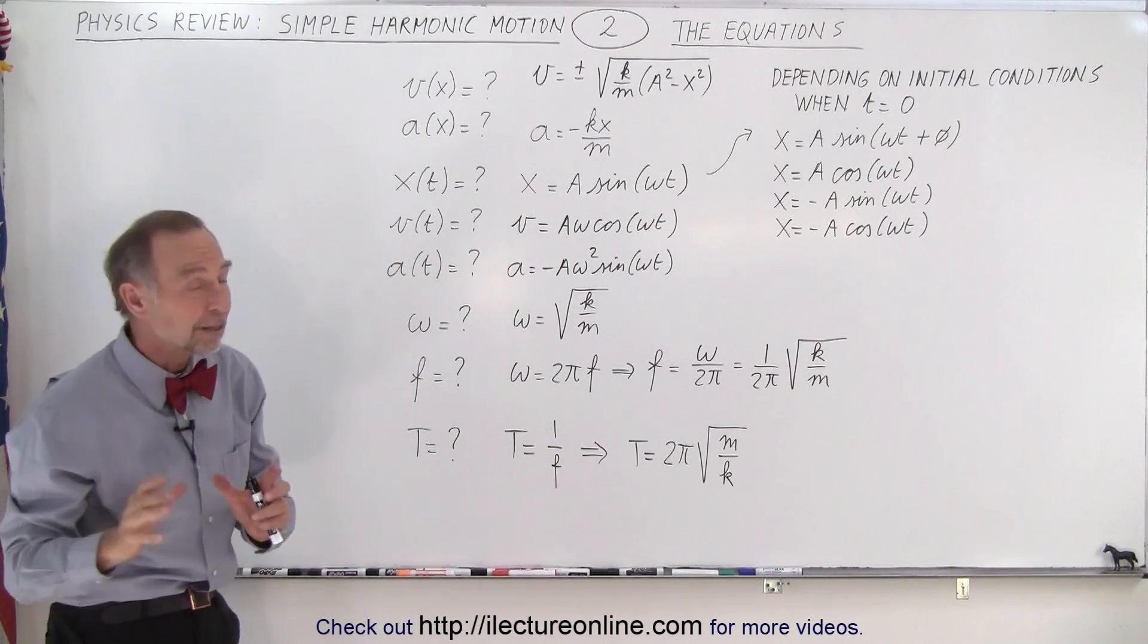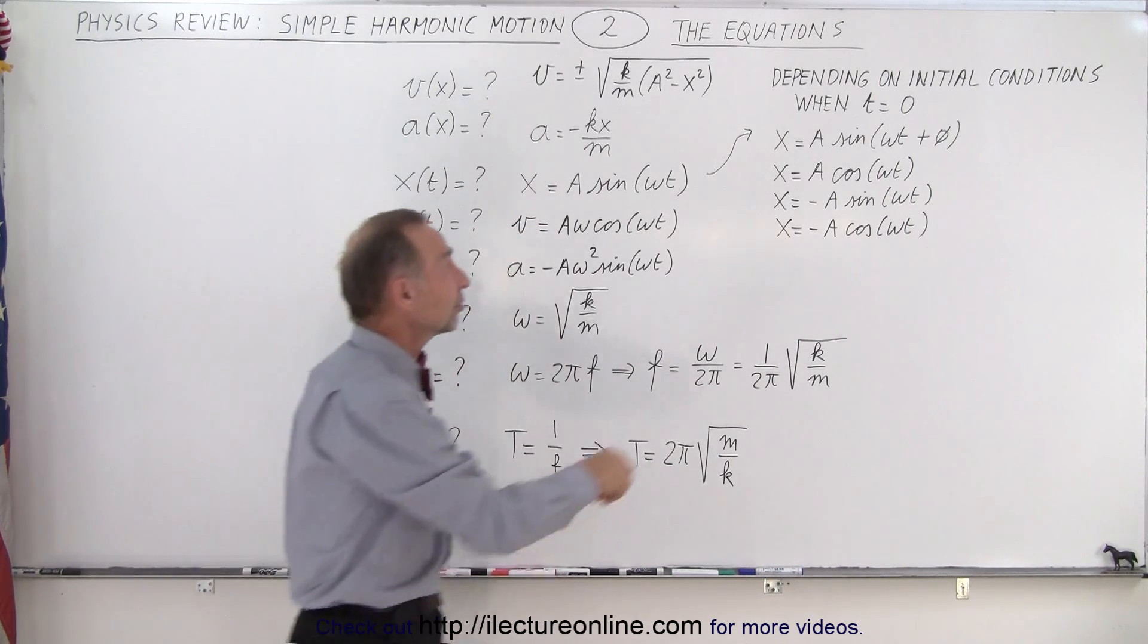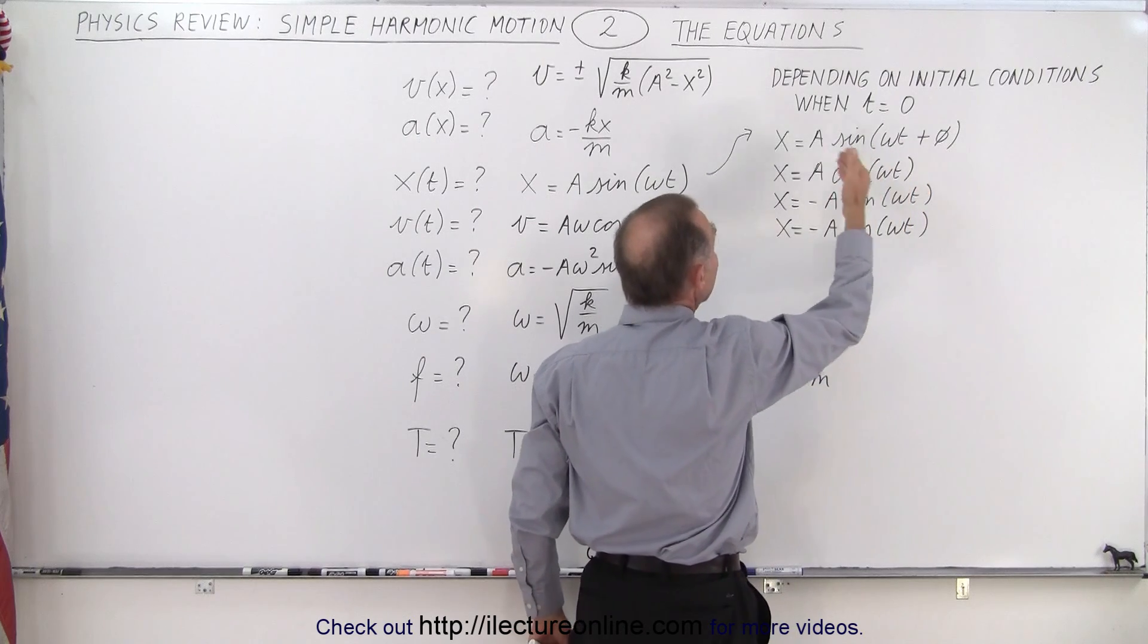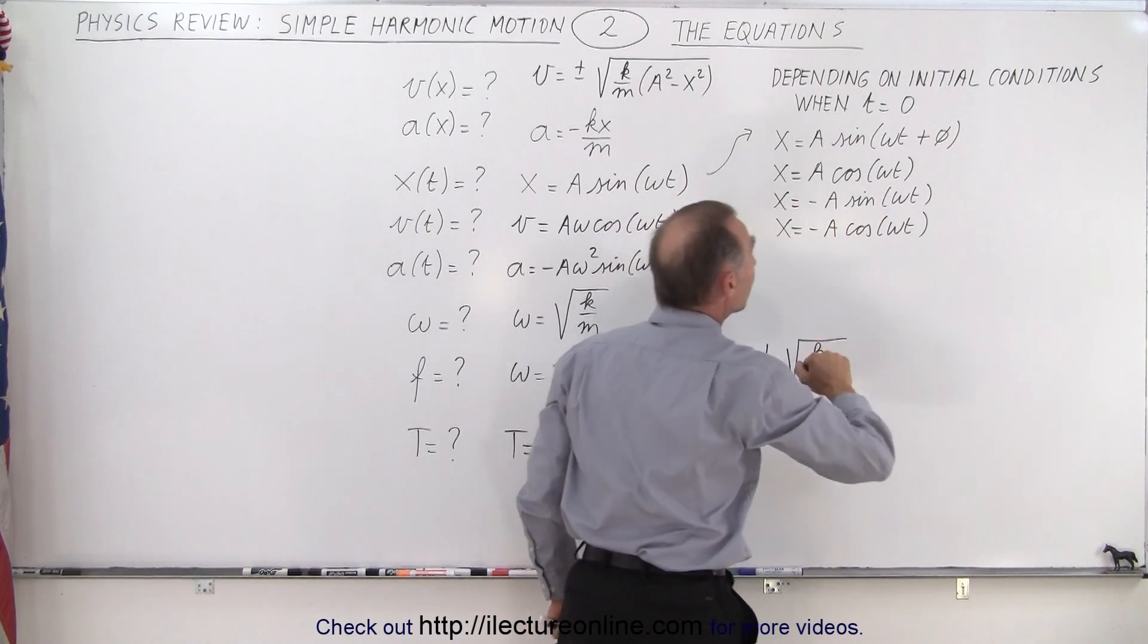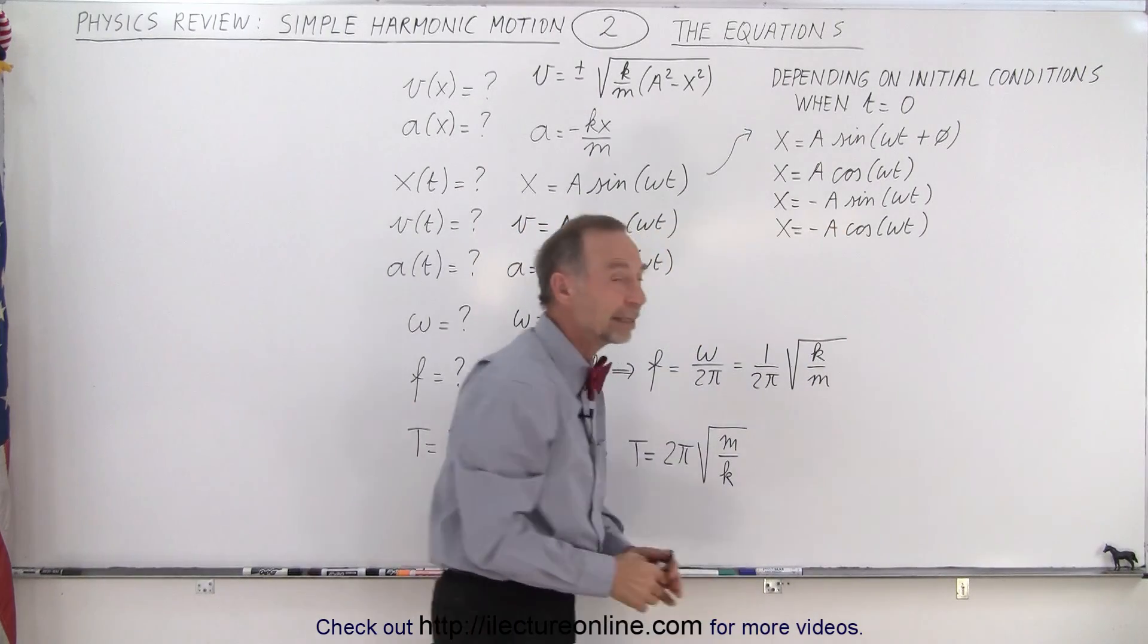Now, depending upon the initial conditions, this equation right here could be a different equation. It could be this equation right there where we have a phase angle, or it could be a times the cosine of omega t, or negative a times the sine of omega t, or negative a times the cosine of omega t.